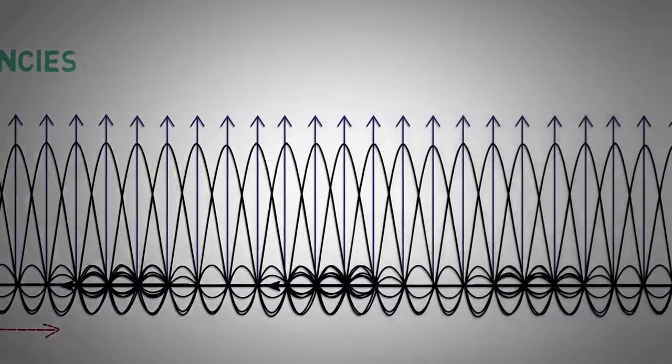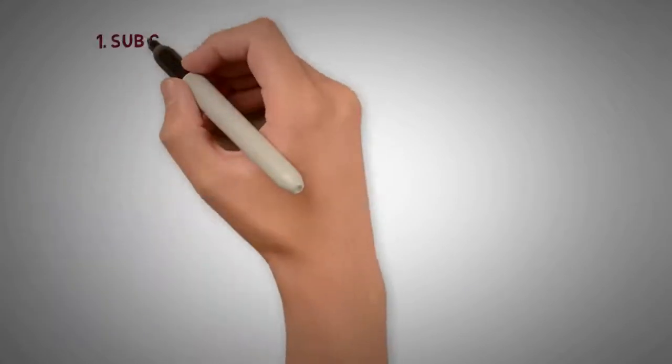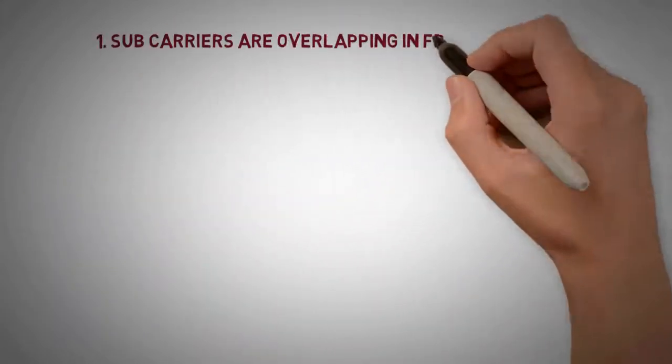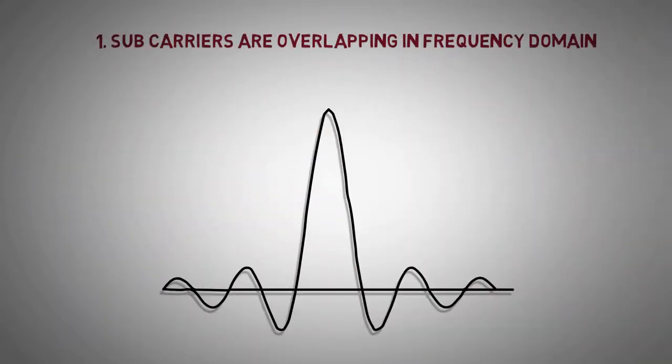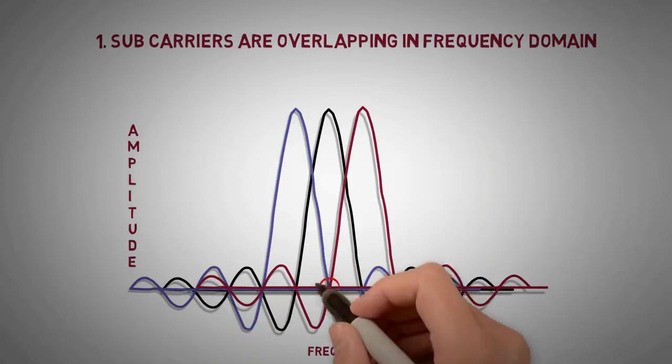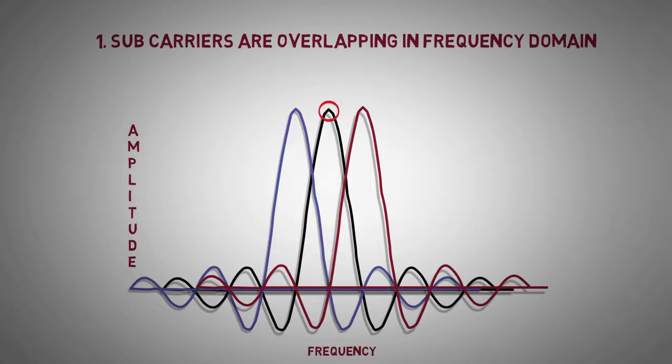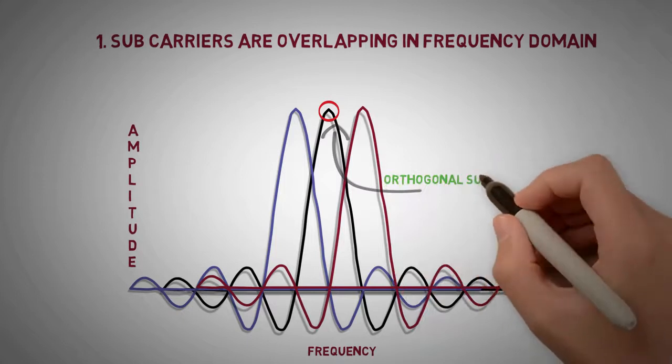Basically we are having 1200 such sinc waves. There are two points to be noted here. Firstly, the sub-carriers are overlapping in frequency domain. As we can see, the sub-carriers are placed in a manner that all the other sub-carriers have a zero component at the peak of one sub-carrier. Such sub-carriers are called orthogonal.